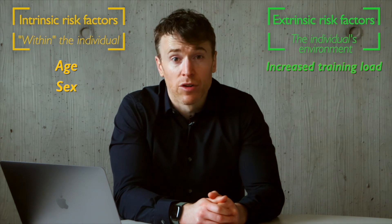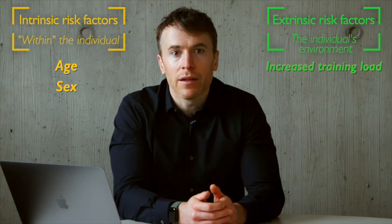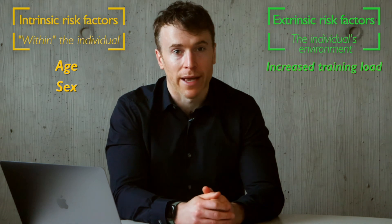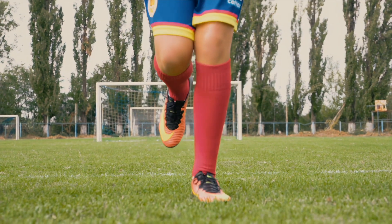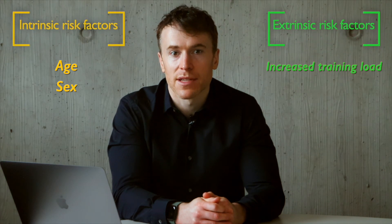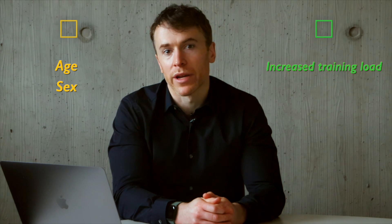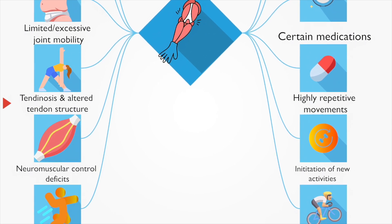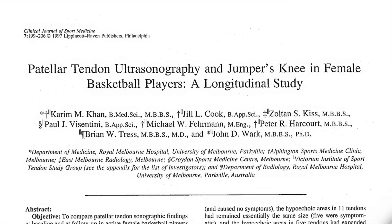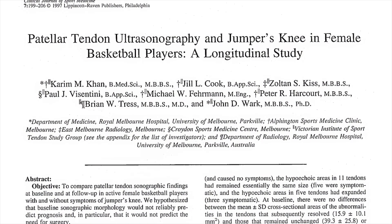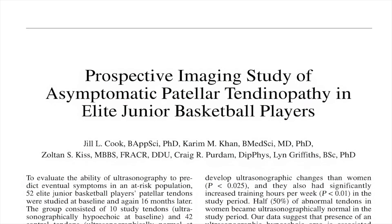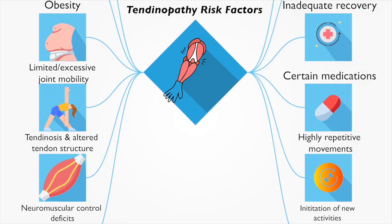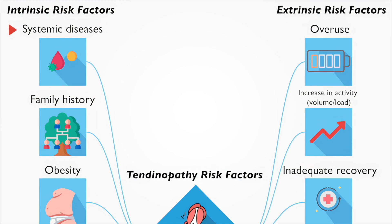Gender strongly influences the risk of developing certain tendinopathies too. The influence of gender on tendinopathy is not well understood, but may represent a combination of biomechanical variables like hip-to-knee angles, hormonal influences like estrogen levels and menopausal status, and different sporting or occupational behaviors. Prior tendon lesions also represent a significant intrinsic risk factor; in high-risk groups like athletes participating in jumping sports, asymptomatic lesions identified on ultrasound at the start of the season have been associated with an increased risk of developing symptomatic tendinopathy during the season.